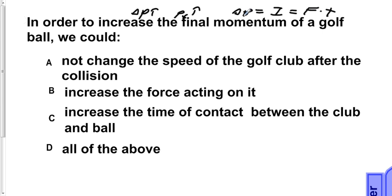Now that we have our initial information laid out, let's look at all three answer choices. A says not change the speed of the golf club after the collision. This is correct because in order for the statement to work, we need to apply a greater force initially to the golf ball.